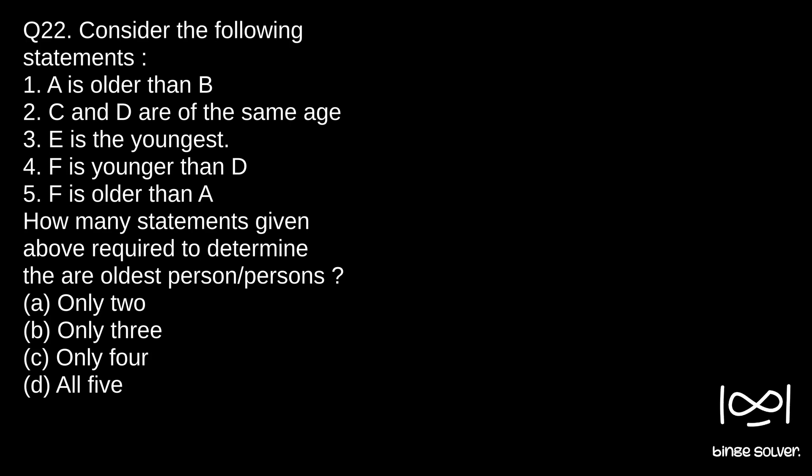First statement is A is older than B, which can be written as A is greater than B. C and D are of the same age, so C equals D. E is the youngest.